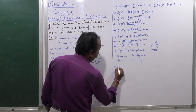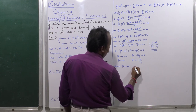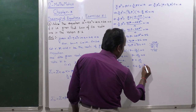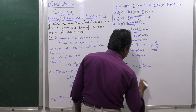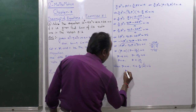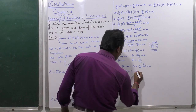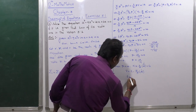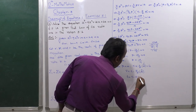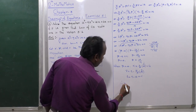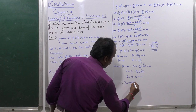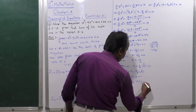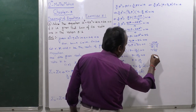When β = 4: α = (3/2) × 4 = 6. And γ = 9 - (5/2) × 4 = 9 - 10 = -1. Therefore, the first set of roots is α = 6, β = 4, γ = -1.